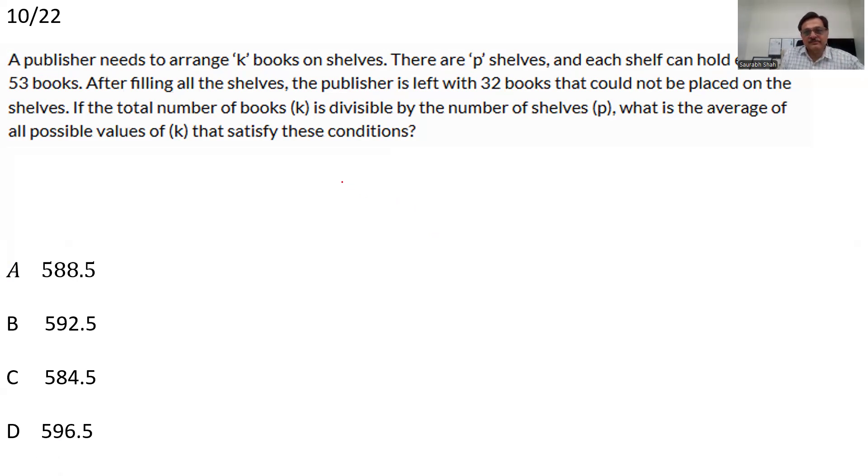A very interesting question here. K books are to be arranged on a shelf. P shelves, there are P shelves and each can hold exactly 53 books. So if you put 53 books on P shelves, the total number of books put up is 53P. And we are told that 32 books are still left out. So we have K is equal to 53P plus 32. Now we are also told that K is a multiple of P. Total K is divisible by P, K is a multiple of P. So if I just write K as P into X, we can have PX is equal to 53P plus 32 or 53. So we can have P into X minus 53 is equal to 32. This says that P is a factor of 32 and 32 is a power of 2. The only factors of 32 are 1, 2, 4, 8, 16, 32.